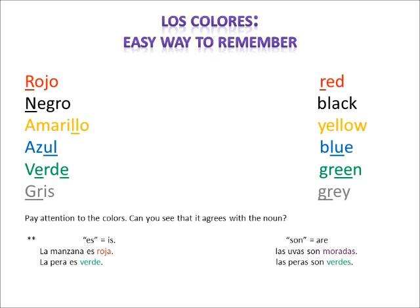Now pay attention — the colors agree with the noun. Look at this sentence: la manzana es roja. You see, manzana is a feminine word — it ends in A — and therefore you need roja. These basic colors, on this page and two more on the next page, are basic colors that have to agree with the noun.